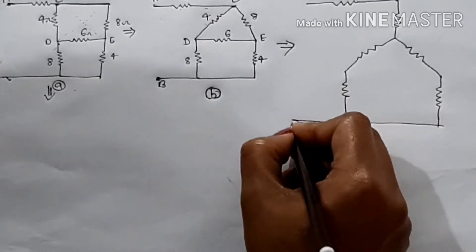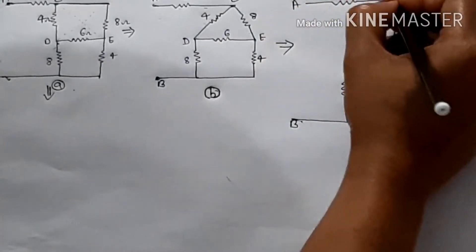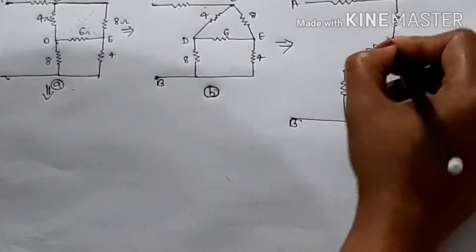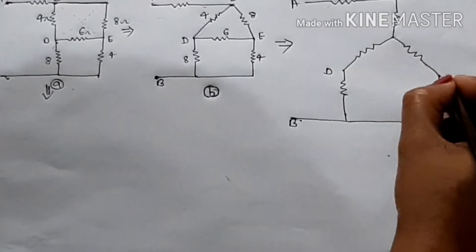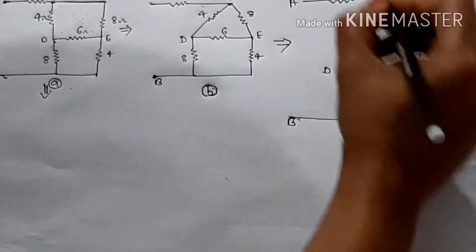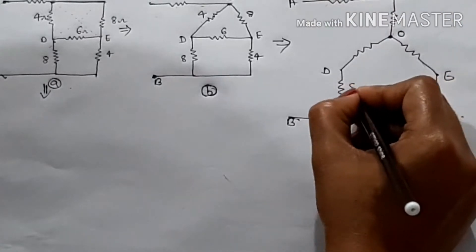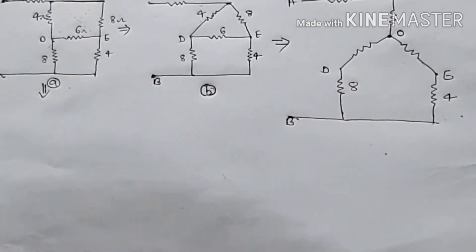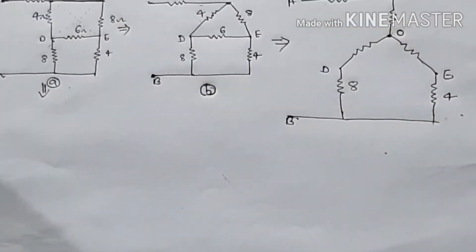Suppose we need a point O. 4 ohm here, 8 ohm here, 8 ohm here, 8 ohm here. Now this is the equivalent resistance.